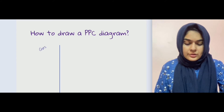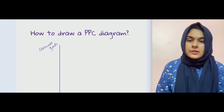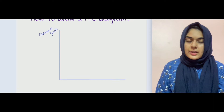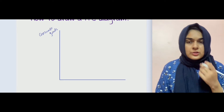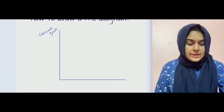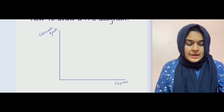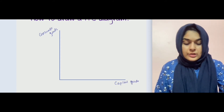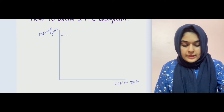Let's say we place consumer goods on the y-axis — so all possible output levels of consumer goods are on the y-axis — and output levels of capital goods on the x-axis. The bow-down curve is drawn between these two axes.